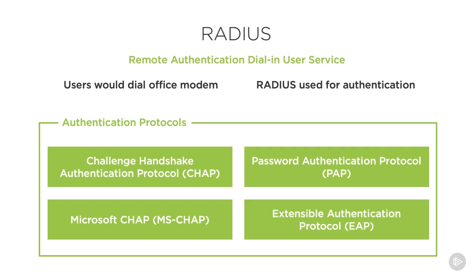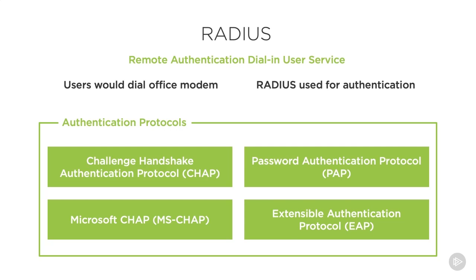Eventually, IEEE standardized another protocol called Extensible Authentication Protocol, or EAP. Now that we know the history of RADIUS and the protocols used to pass authentication information, let's talk about how it works.